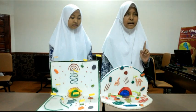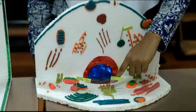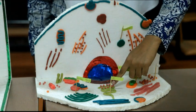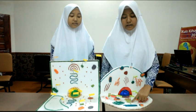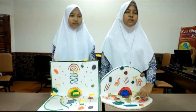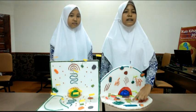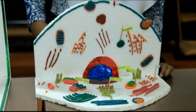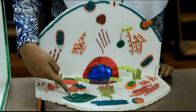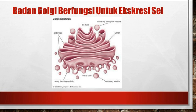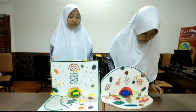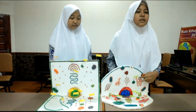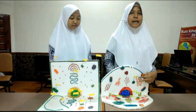Retikulum endoplasma terbagi menjadi dua. Yang pertama, RE kasar — mengapa dikatakan RE kasar? Karena mengandung banyak ribosom. Yang kedua, RE halus, karena mengandung sedikit atau tidak adanya ribosom. Selanjutnya, badan Golgi, berfungsi dalam ekskresi sel. Yang terakhir, sentriol, berfungsi pada pembelahan sel.